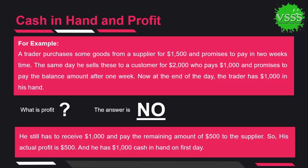When he receives the other one thousand dollars after two weeks, that is also cash in hand. But from that thousand dollars he will pay five hundred to the supplier, and the remaining five hundred dollars will be considered as profit. So the real difference is: the amount we have in hand is cash in hand, and the amount after deducting all expenses from cash in hand is considered profit.